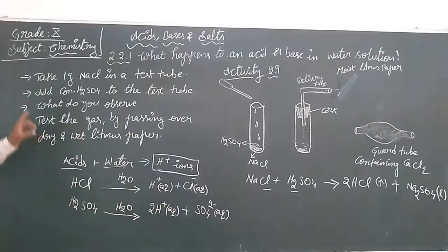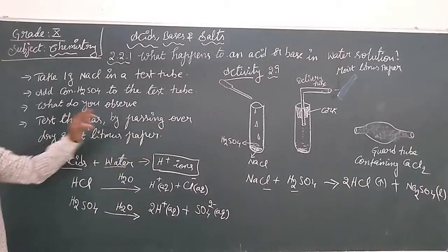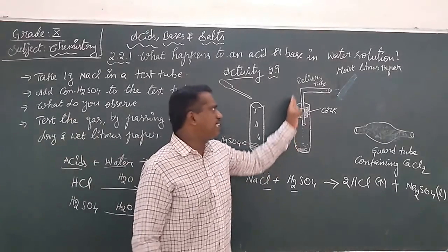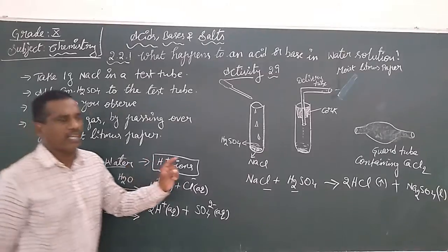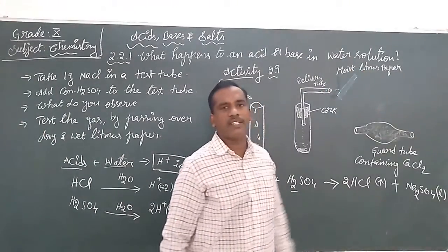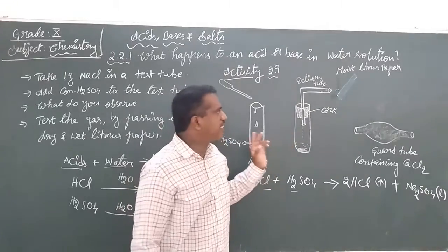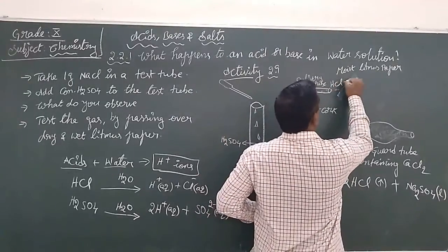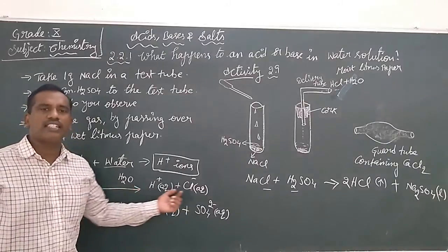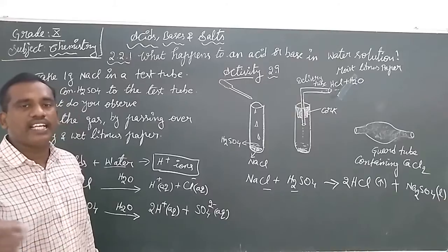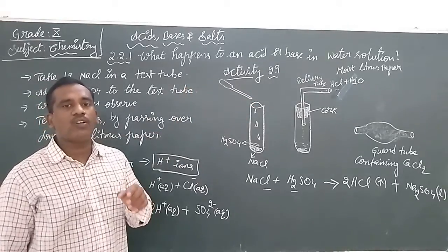Take 1 gram of sodium chloride in a test tube and add concentrated H₂SO₄. We observe some gas is coming out. Test the gas by passing it over dry and wet litmus paper. Here we use moist litmus paper — moist means it has some water particles sticking to its surface. The HCl gas, when it comes in contact with the moist water particles, will start dissociating to give H⁺ ions and Cl⁻ ions. H⁺ ions means it is an acidic compound. So the blue litmus paper changes into red color when it comes in contact with water.